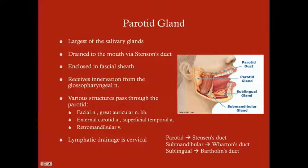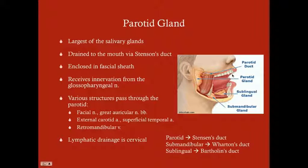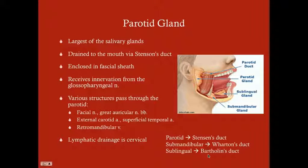The three salivary glands are the parotid, the submandibular, and the sublingual — sublingual meaning below the tongue. The parotid gland drains via Stenson's duct. The submandibular gland drains via Wharton's duct, which exits below the tongue. The sublingual gland drains via Bartholin's duct, which then drains into Wharton's duct and out beneath the tongue.